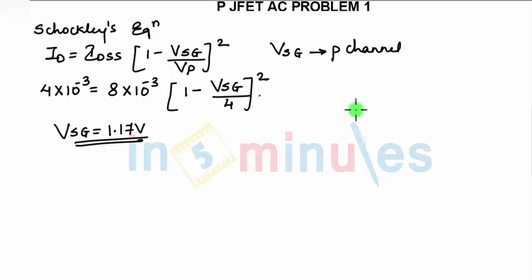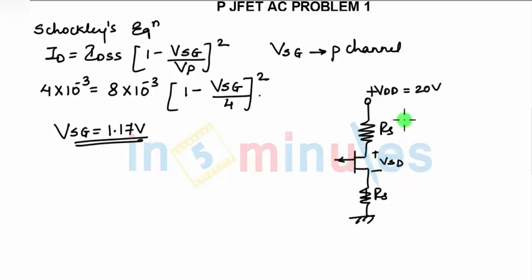Now when you apply KVL to the drain-source loop, you have the source resistance, you have the drain resistance, and then it is connected to ground here. You have plus VDD which is given as 20 volts. Here you have RS, RD. This is P-channel, here plus minus VSD. So when you apply KVL to drain-source loop, what will be the equation in this case?